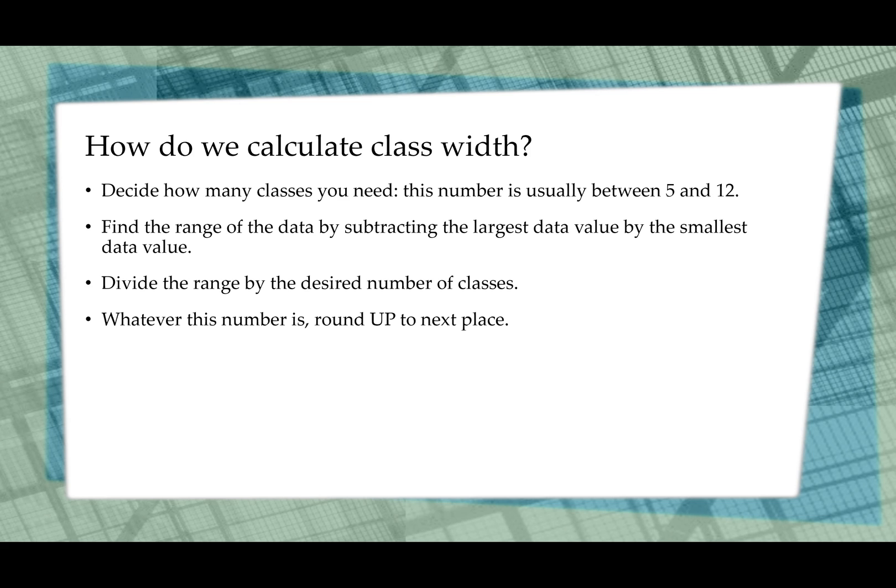And here's the important part. Whatever the number is, round up. You always, always, always, always round up. It doesn't matter. The rules of rounding don't apply when we're talking about class width. Round up. So for example, if we end up, when we find the range and then divide by the number of classes and we get 3.293029, that will round up to 4. It does not matter that the 10th place is a 2. We round up.